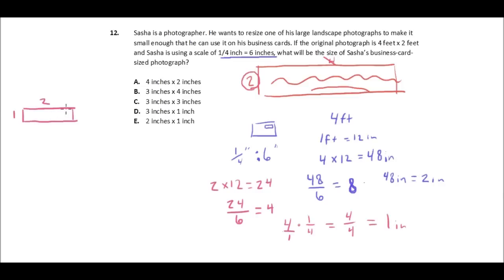So we would have, so if we did length times width, this is length and this is width, it should be 2 times 1, so 2 by 1, 2 inches by 1 inch for our brand new smaller photograph, and that is answer E.